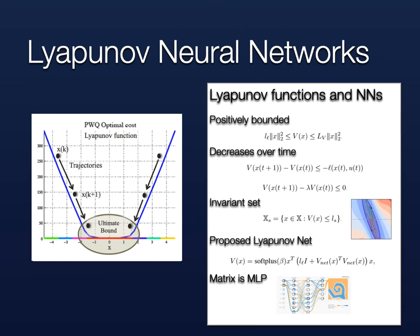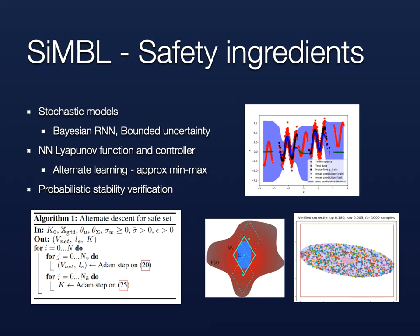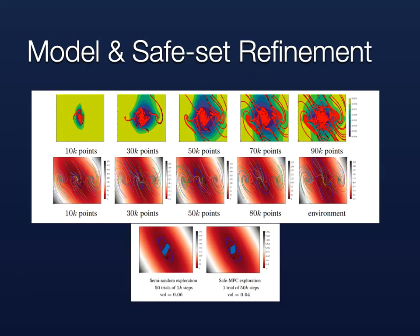We learn this Lyapunov function using a neural network, without labels and by only using one-step data from a surrogate model. This model is a Bayesian RNN; we use the uncertainty estimate to produce a robust safe set with an approximate min-max control problem. We jointly learn a controller and a Lyapunov function neural network with alternating gradient descent, and can formally verify results through probabilistic verification by sampling. We tested on an inverted pendulum and noticed that with more data and less uncertainty, the estimated safe set increases in size as expected. We then used the safe set within an MPC framework to collect data safely and efficiently, and our safe exploration proved more efficient than random sampling.